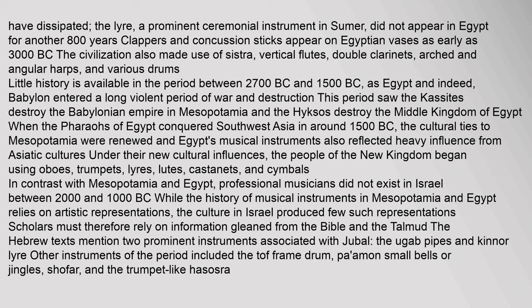In contrast with Mesopotamia and Egypt, professional musicians did not exist in Israel between 2000 and 1000 BC. While the history of musical instruments in Mesopotamia and Egypt relies on artistic representations, the culture in Israel produced few such representations. Scholars must therefore rely on information gleaned from the Bible and the Talmud. The Hebrew texts mention two prominent instruments associated with Jubal — the ugab pipes and kinnor lyre. Other instruments of the period included the tof frame drum, bells or jingles, shofar, and the trumpet-like chatzotzrah.